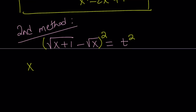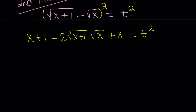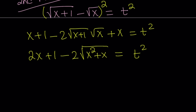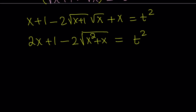Squaring both sides, the left-hand side expands as (√(x+1) − √x)² = (x+1) − 2√(x+1)·√x + x = t². Simplifying, we get 2x plus 1 minus 2 times the square root of x squared plus x equals t squared. Now let's move the radical to the right-hand side so we can square again to eliminate it.